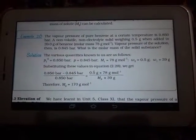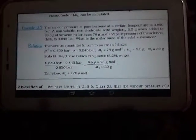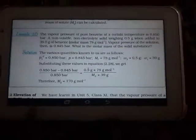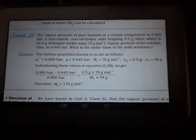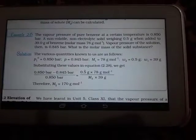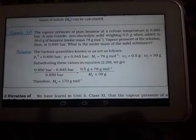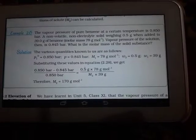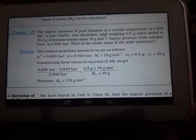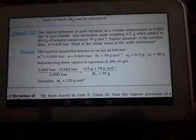What is written here is the vapor pressure of pure benzene at a certain temperature is 0.850 bar. A non-volatile, non-electrolyte solid weighing 0.5 gram when added to 39.0 gram of benzene whose molar mass is 78 gram per mole.